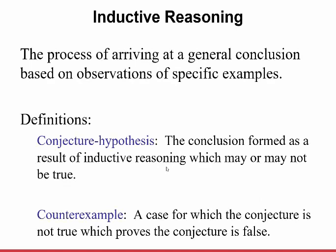Let's talk about inductive reasoning first. This is the process of arriving at a general conclusion based on observations of very specific examples. The first definition is what we call a conjecture or hypothesis — the conclusion formed as a result of inductive reasoning, which may or may not be true.